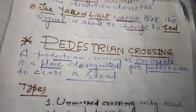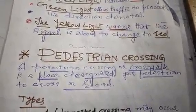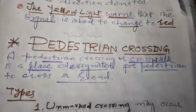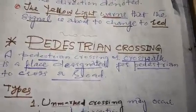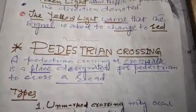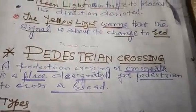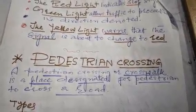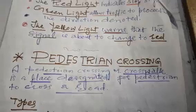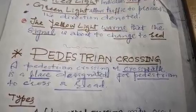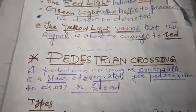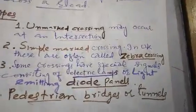Next is pedestrian crossing. Pedestrians are people who walk on foot. A pedestrian crossing, also called a crosswalk, is a place designated for pedestrians to cross a road. So crosswalk or pedestrian crossing is a designated place where a person on foot can cross the road. There are four types of pedestrian crossings.